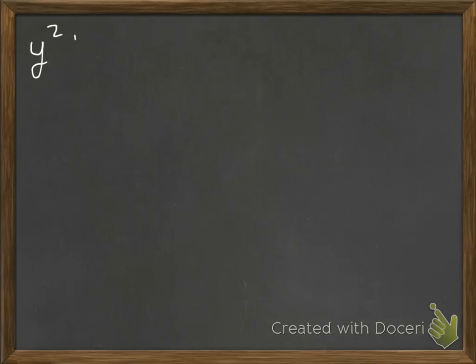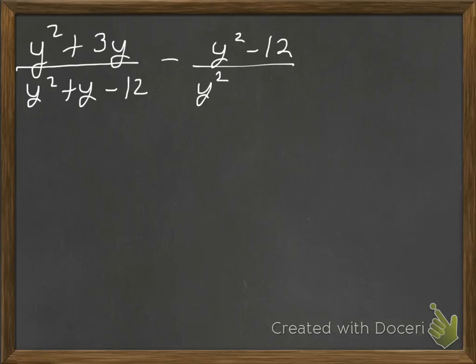We'll look at one more. y squared plus 3y over y squared plus y minus 12 minus y squared minus 12 over y squared plus y minus 12. And here's where it's really important to put that parentheses around what we're subtracting. So we do have common denominators, so we can just roll with it.